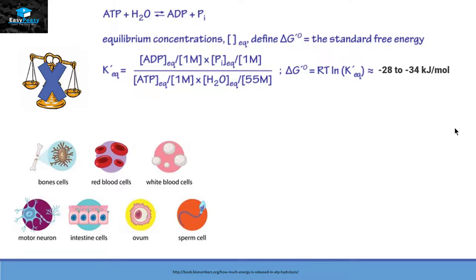The energy released also depends on the concentration of ATP, ADP, and inorganic phosphate in that location. The concentration of ATP, ADP, and inorganic phosphate is higher in mitochondria than in cytoplasm. It also depends on the concentration of magnesium ions, because magnesium can attach itself with ATP and ADP. The reason magnesium ions attach to ATP and ADP is to provide stability to these molecules and to prevent unnecessary bonding of these oxygens with the enzyme.